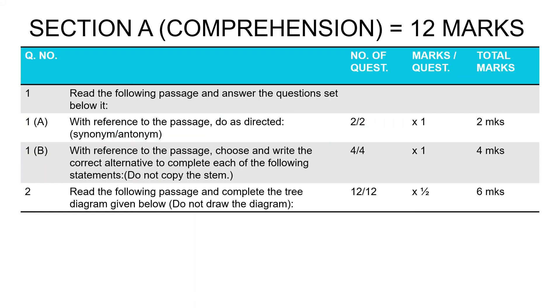We begin looking at Section A, which is comprehension, carrying a total of 12 marks. You have two kinds of questions in English comprehension. The first one is a normal comprehension passage where you're given a passage and below it you have two kinds of questions: with reference to the passage do as directed, which is finding synonyms or antonyms, two questions for one mark each giving you two marks; and with reference to the passage, choose and write the correct alternative to complete the following statements. That is four questions like that, giving you four marks. For your first comprehension passage in total, you get six.